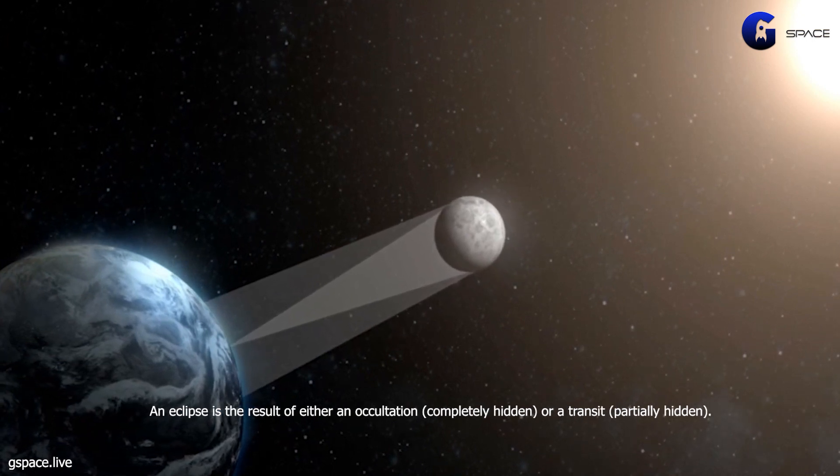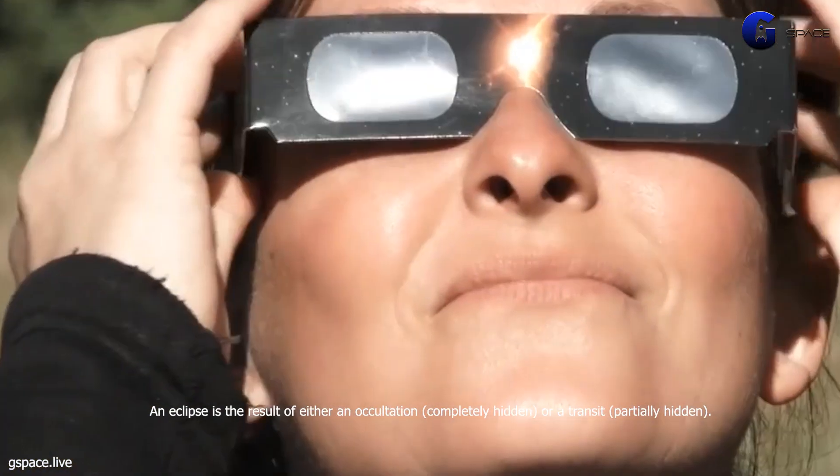An eclipse is the result of either an occultation, completely hidden, or a transit, partially hidden.